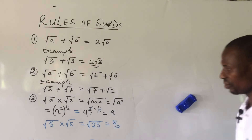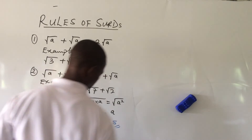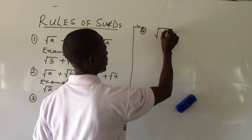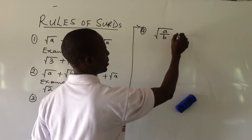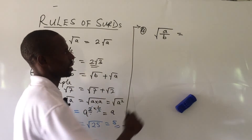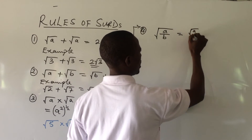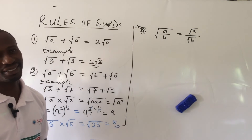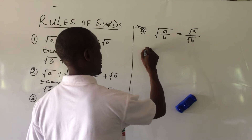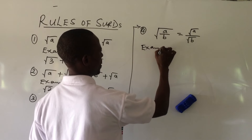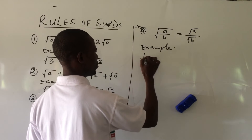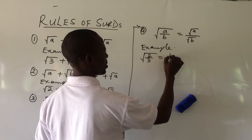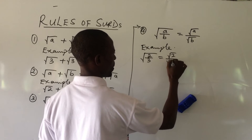Rule number four is the division law: if you have the square root of a over b, you can split this to give root a over root b. For example, root of two over three is the same thing as root two over root three.